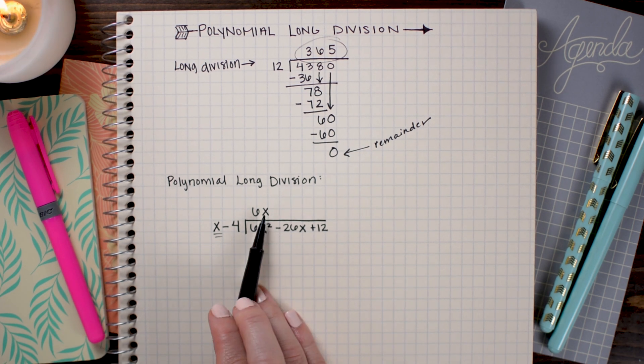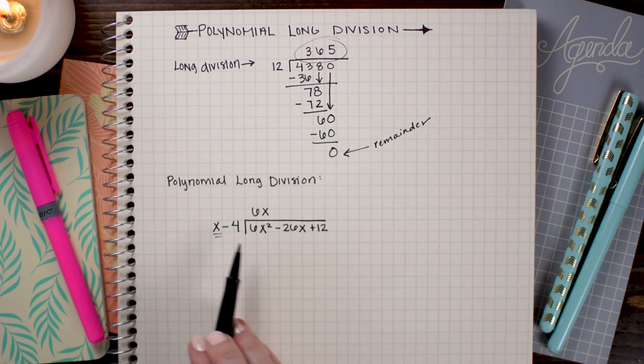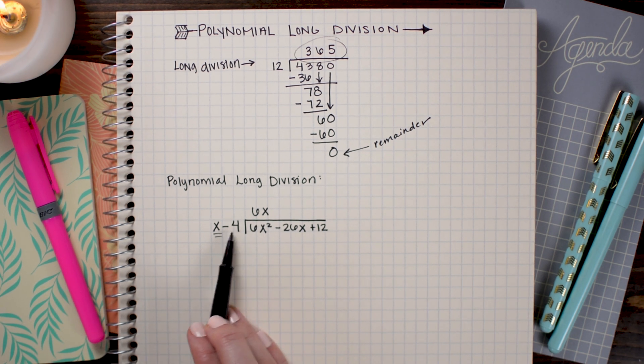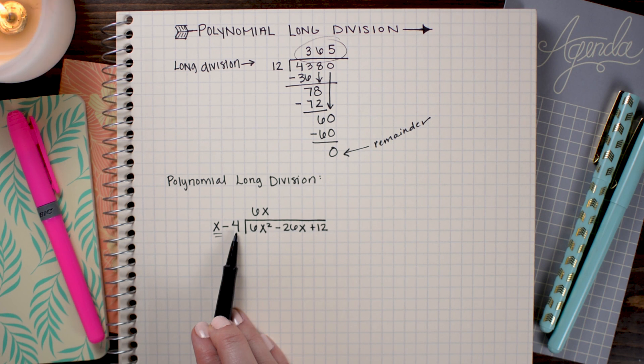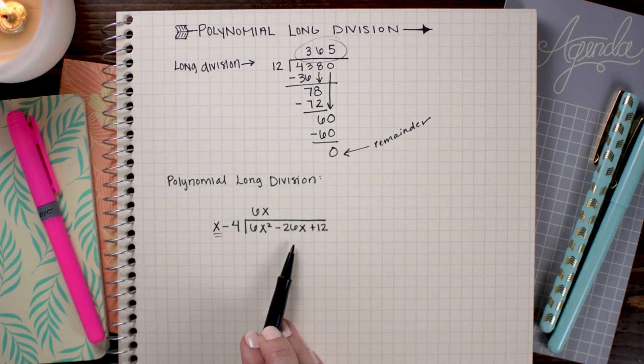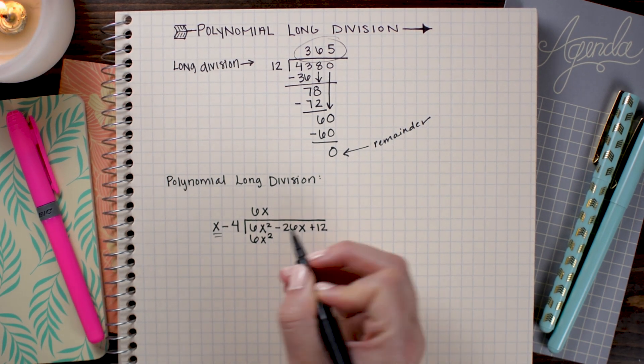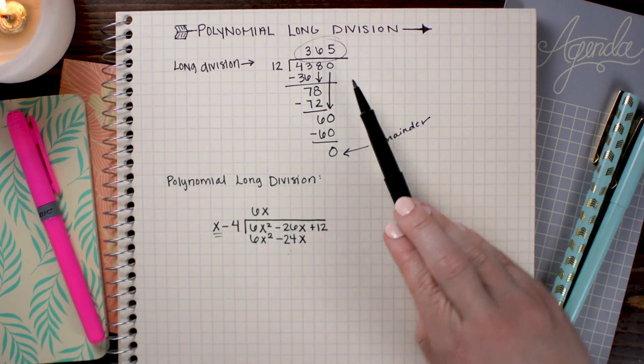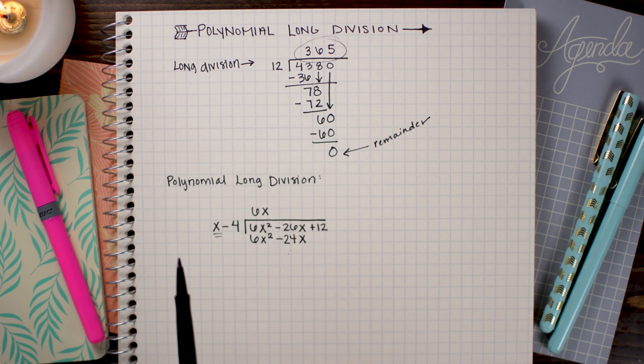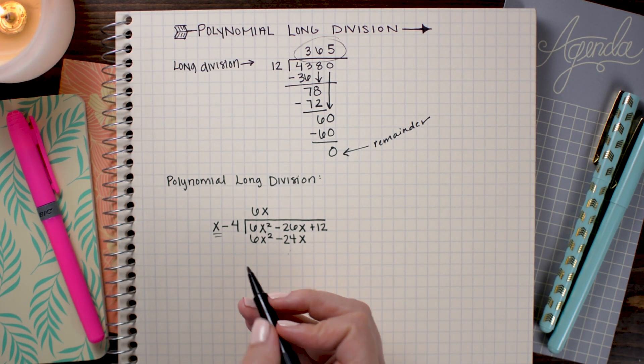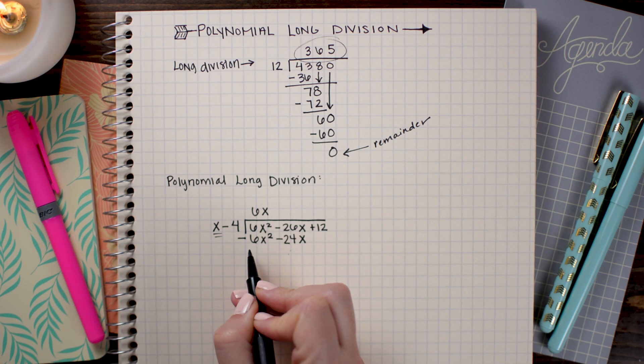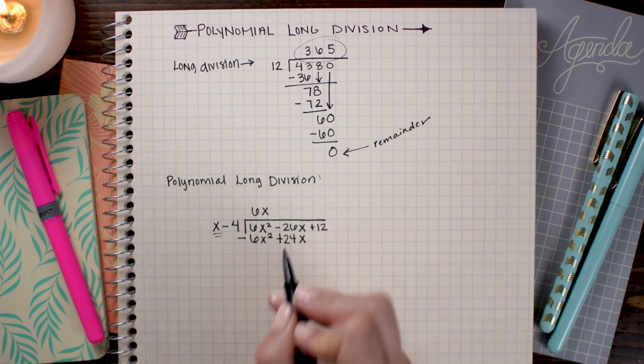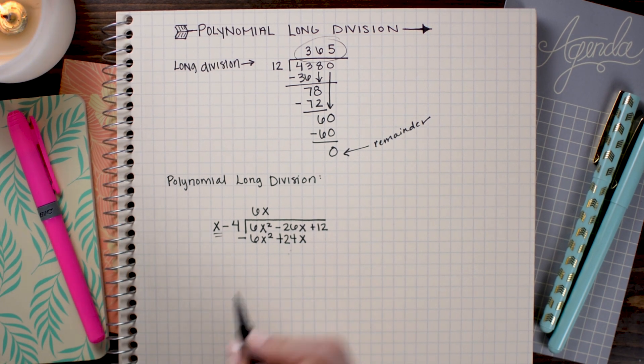So I'm going to go ahead and write 6x above this first term. Now what I'm going to do is I'm going to multiply this 6x times the x and write it here. And then also multiply it with the constant. So I'm going to multiply it with -4 and write that product under the next term. Just like I did in regular long division, I subtracted off those products. I'm going to do the same here. So I'm going to subtract and then just to make it easy, I'm going to subtract 24x, which is going to turn it into a plus sign. So I'm just going to flip the signs.